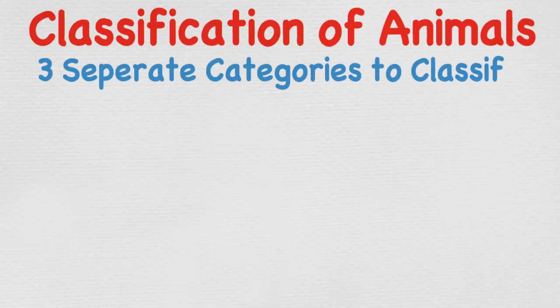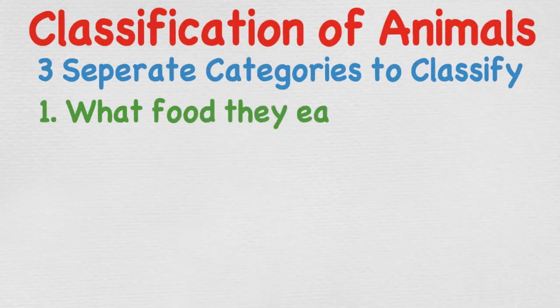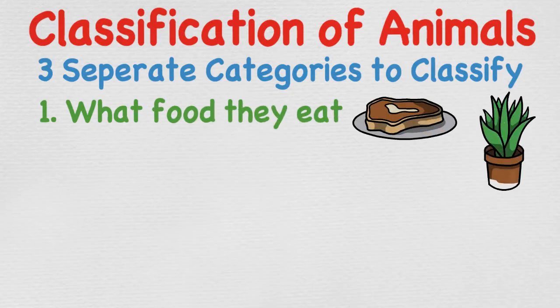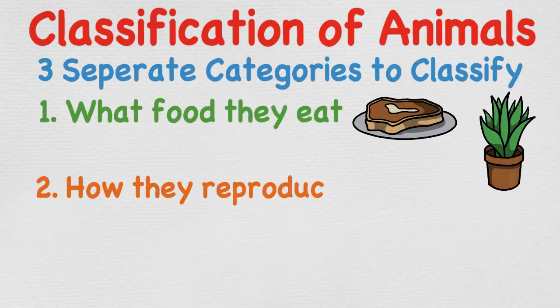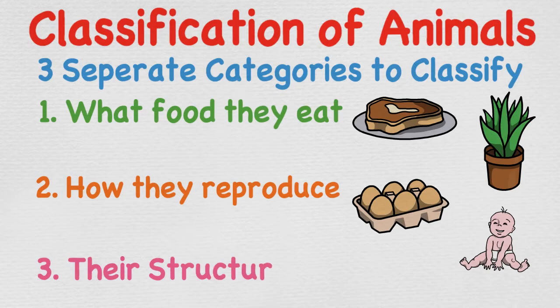Firstly, the reason we classify animals is to help us identify and name all of them. It also allows us to understand the relationship between different animals and how these animals' interactions affect one another. In this video we are going to cover three separate categories used to classify animals: one, the food they eat; two, their reproduction; and three, their structure.